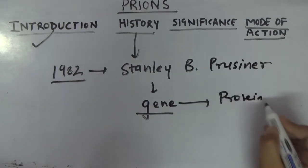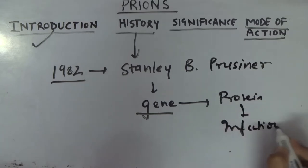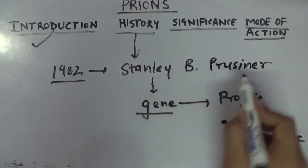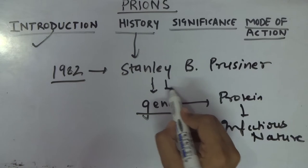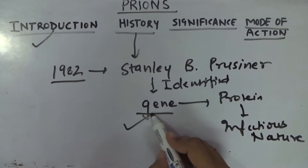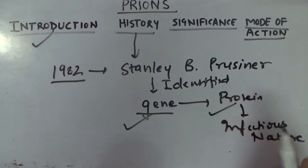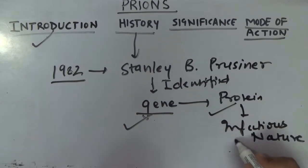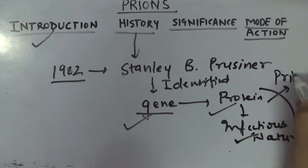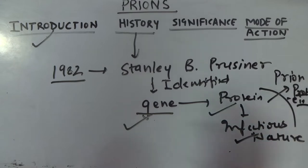Stanley B. Prusiner identified the gene responsible for coding a protein, and that protein in turn was responsible for causing various kinds of diseases — it was of an infectious nature. Later on, this was called the prion protein. So that is a brief historical background of how prion proteins were discovered.